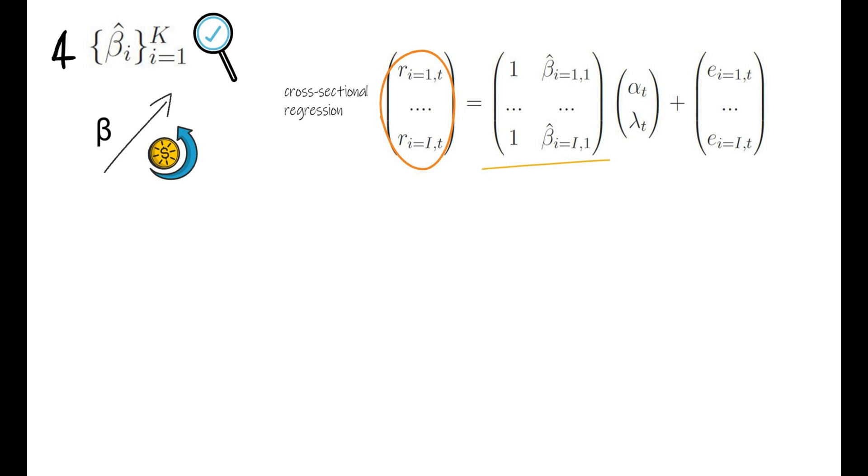What you get out of that is a coefficient that we call alpha t and another one lambda t plus residuals. So that allows you to get a least squares estimate for the time series of alpha and the time series for lambda.